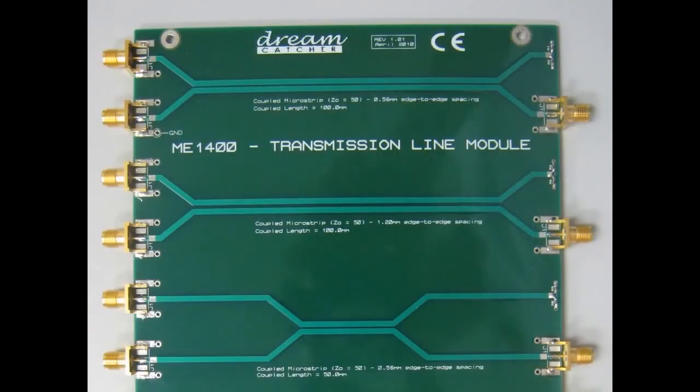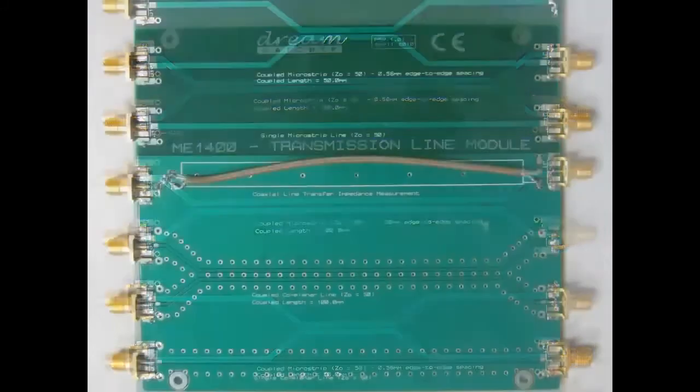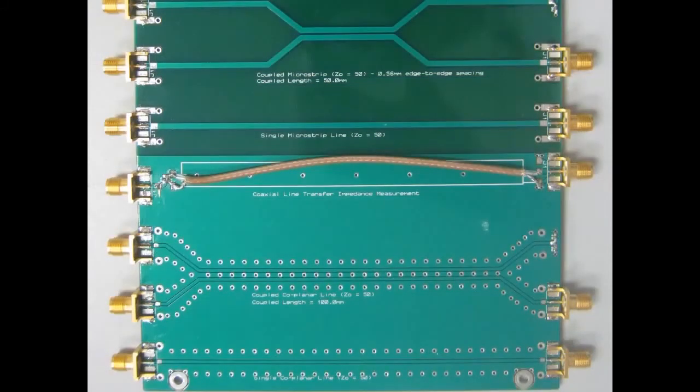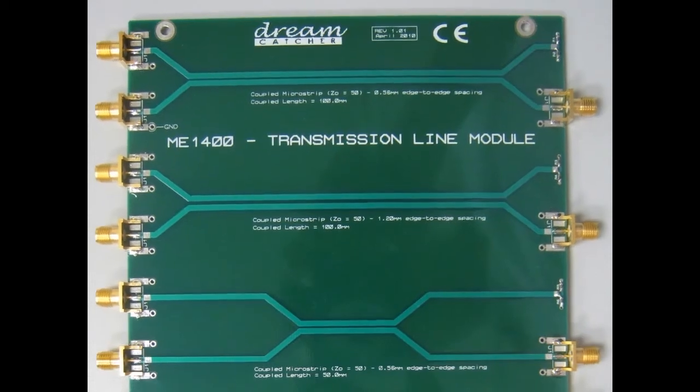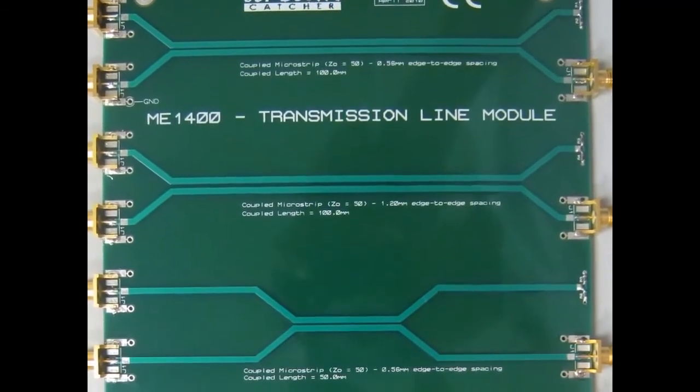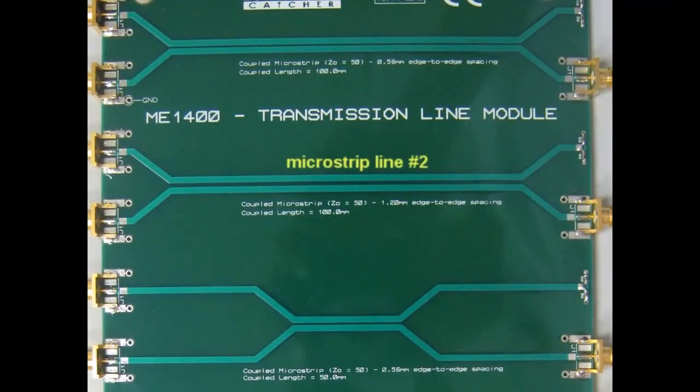We have completed the crosstalk investigation on three coupled microstrip lines. The microstrip line number 1 with couple length of 100 mm and edge-to-edge spacing of 0.56 mm induced the highest crosstalk level, be it at near-end crosstalk or far end crosstalk, comparing to microstrip line number 2 with the same couple length but double the spacing between traces and microstrip line number 3 with the same spacing between traces but half the couple length.